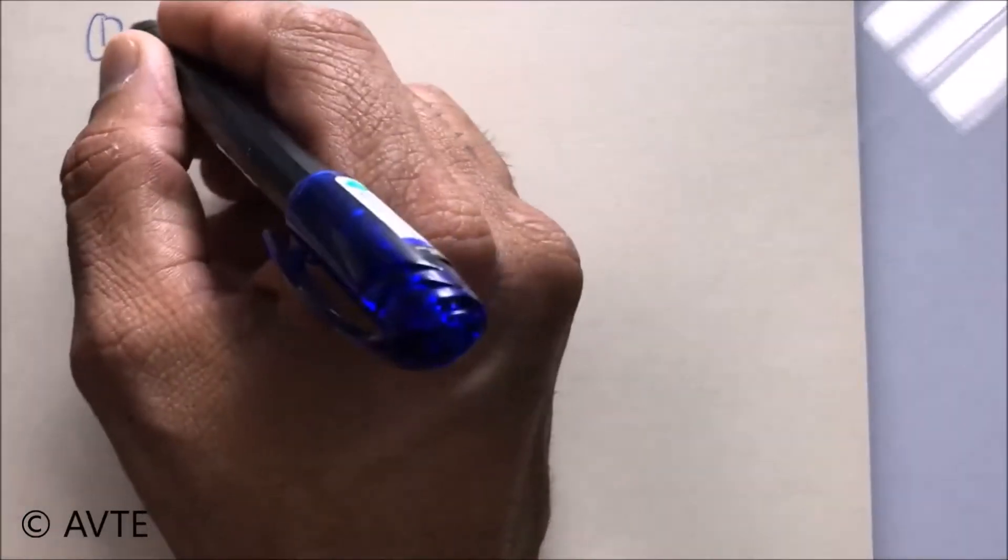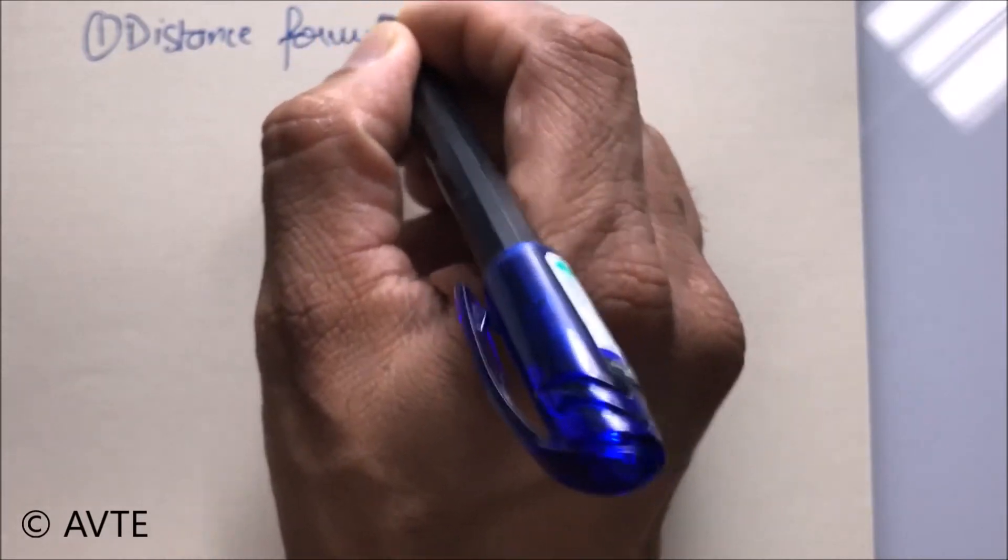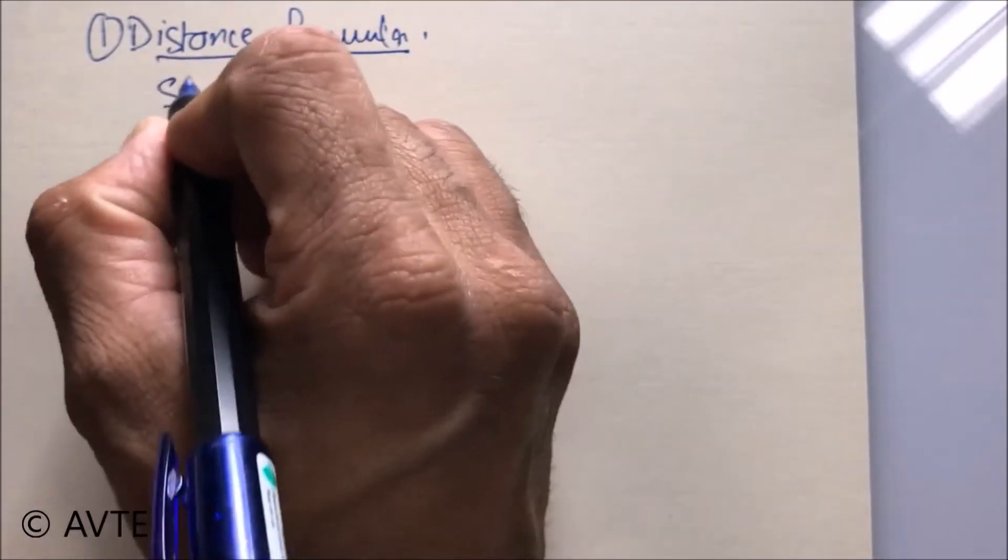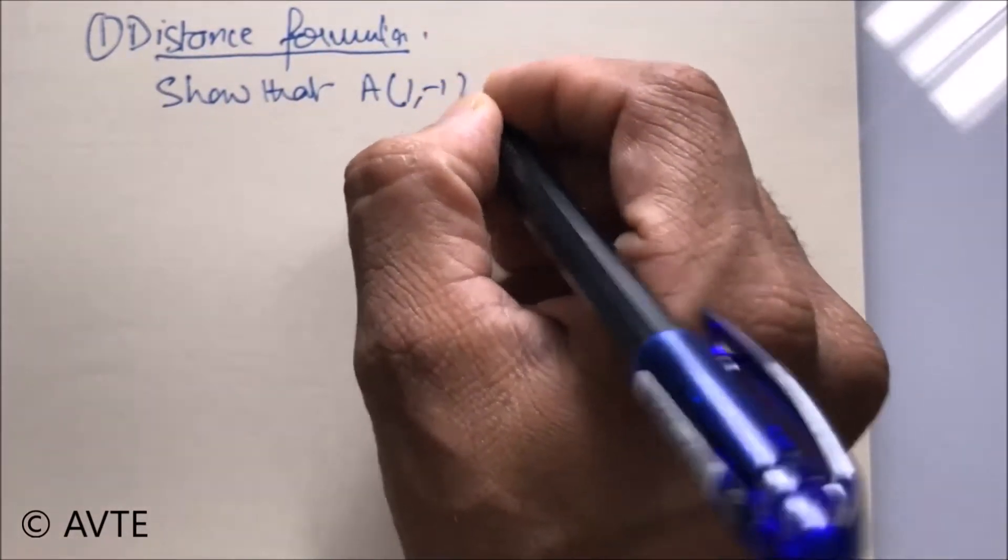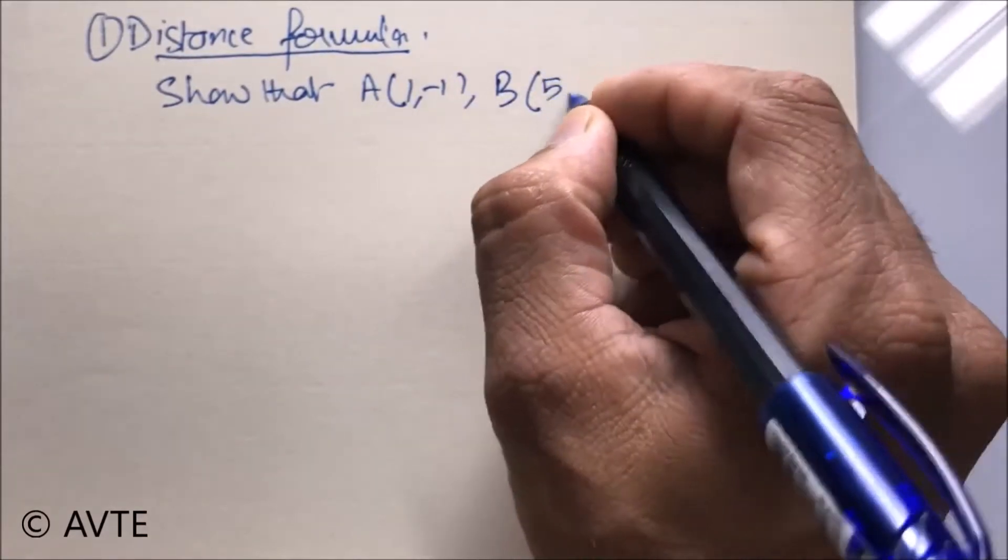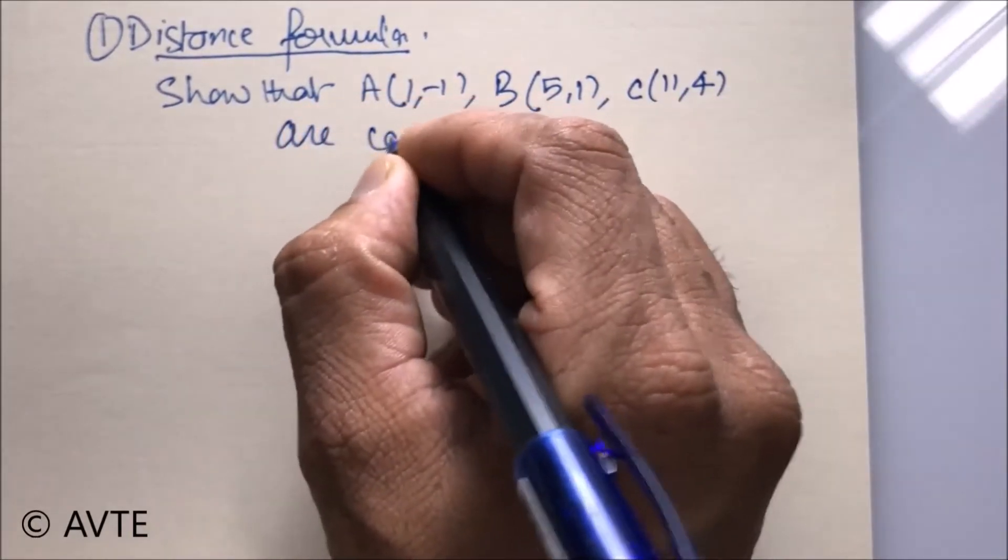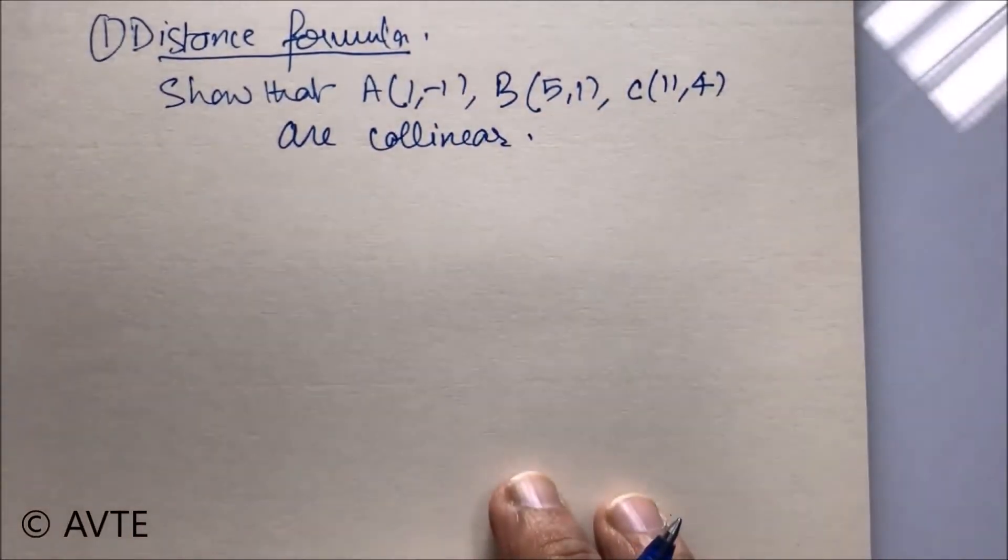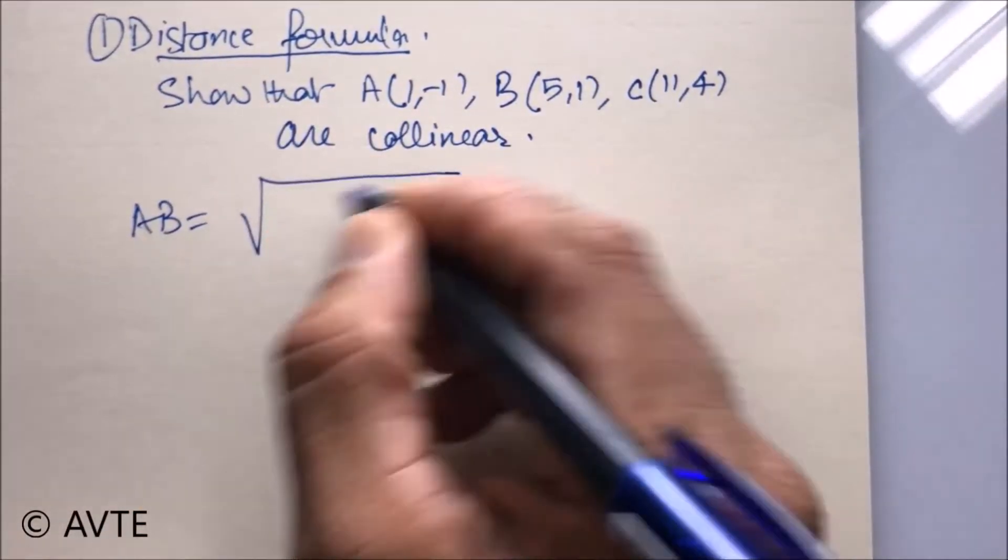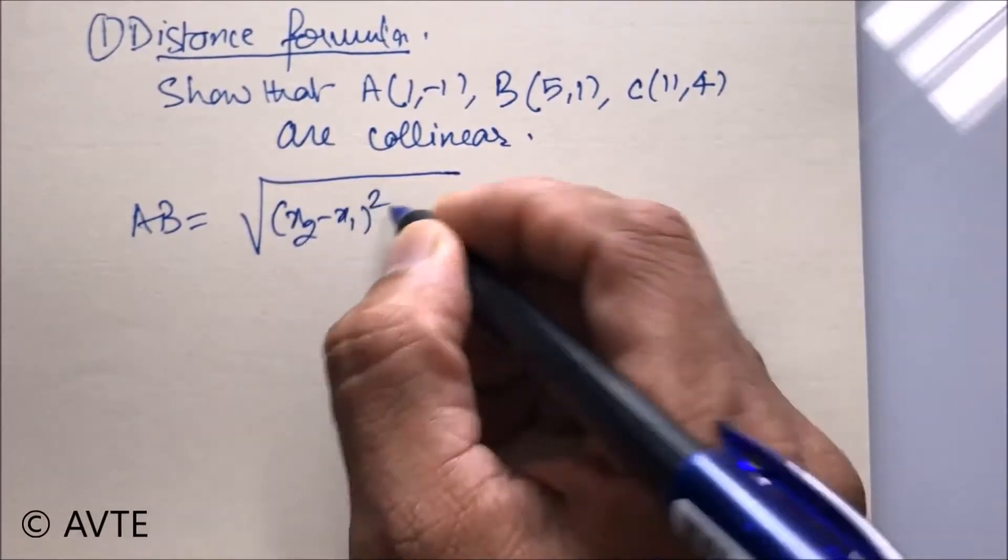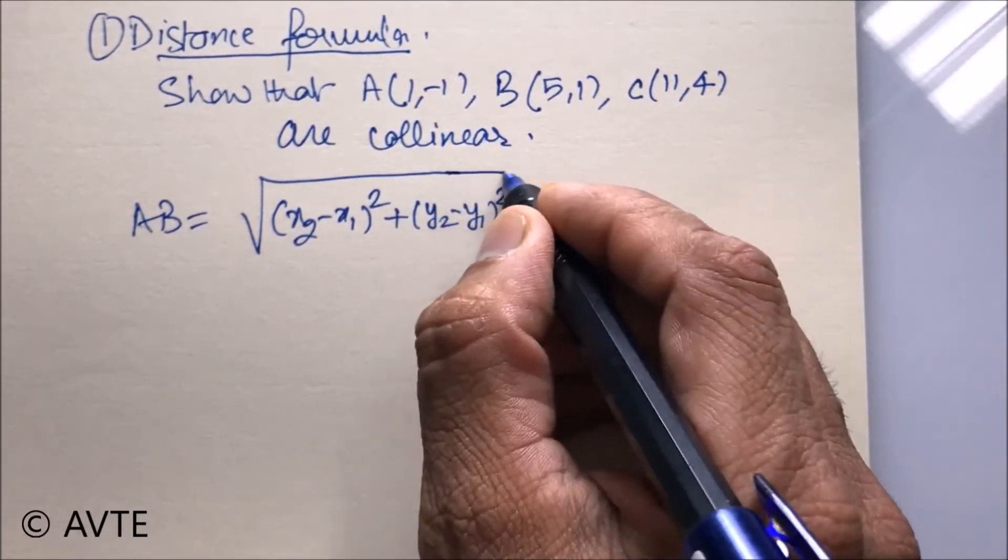Firstly, we are using distance formula. The question says, show that the three points are collinear. So we'll apply distance formula. So for the quick revision, AB is under root of x2 minus x1 the whole square plus y2 minus y1 the whole square units. And this is within the square root.